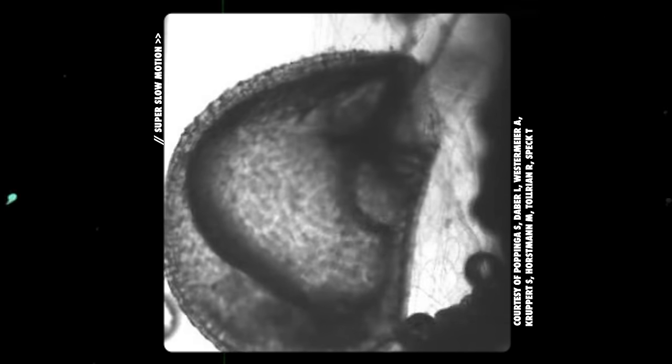To suck in its prey at such super speeds, each hermetically-sealed bladder has negative pressure compared to the water around it. When the trap is triggered, water shoots inside, taking its victims with it.